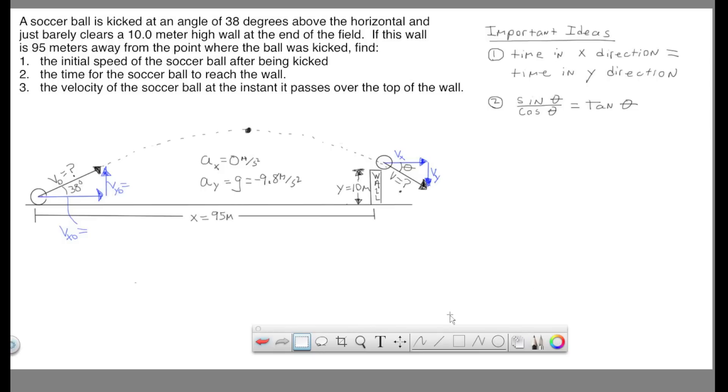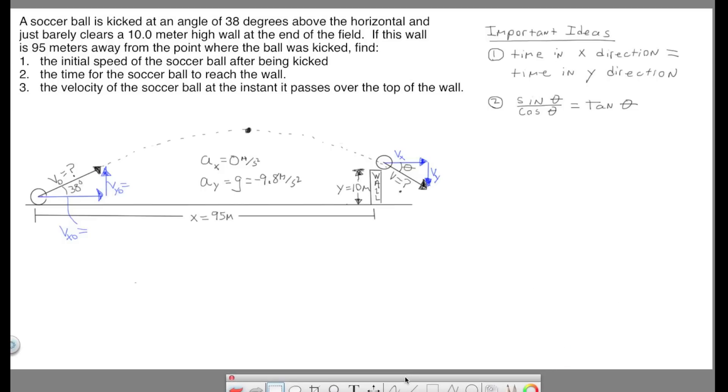Okay, here we have a more complicated projectile motion problem. This is about as complex as we're going to see in AP Physics B. So copy down the question because I'm going to be deleting the actual text here so I have room to solve this. And then also over here on the right hand corner I wrote down two important ideas that we'll be using. You might want to make note of this as well because I'll be deleting that.